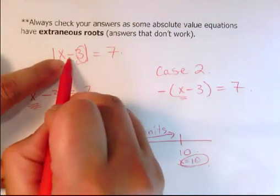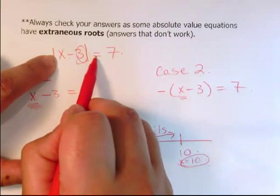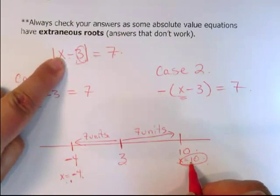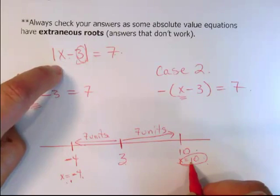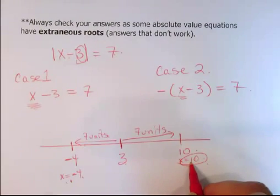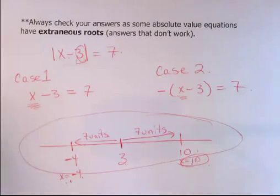So then our x could be negative 4. Now if you just think in your head - if I put a negative 4 in here, what do you end up getting? Well you end up getting negative 4 minus 3, that's negative 7. The absolute value of negative 7 is 7. And if you put a 10 in here, you get 10 minus 3, which is 7. And the absolute value of 7 is 7. So this is just a little visual of what the absolute value equation is trying to figure out.